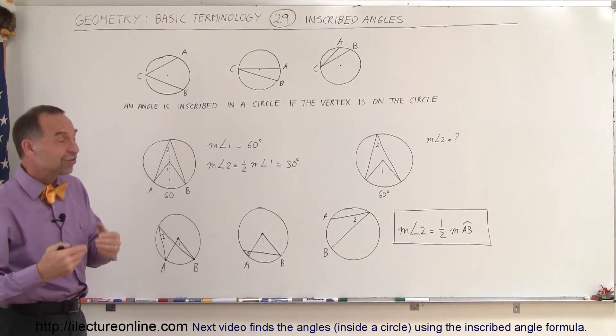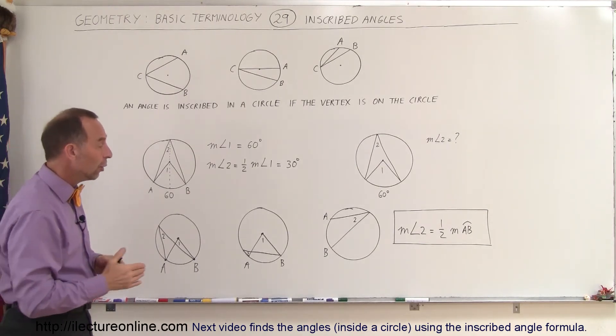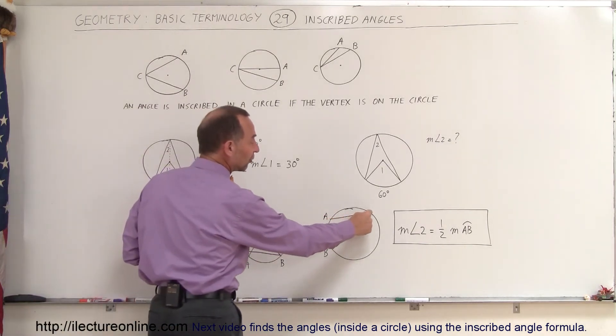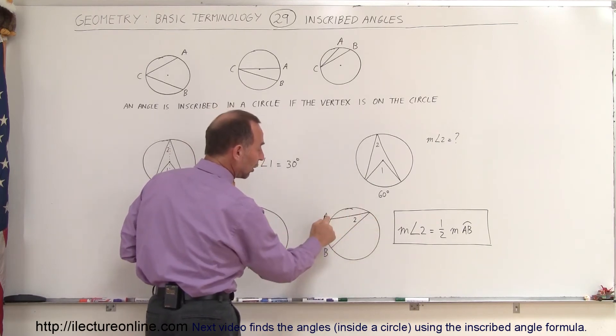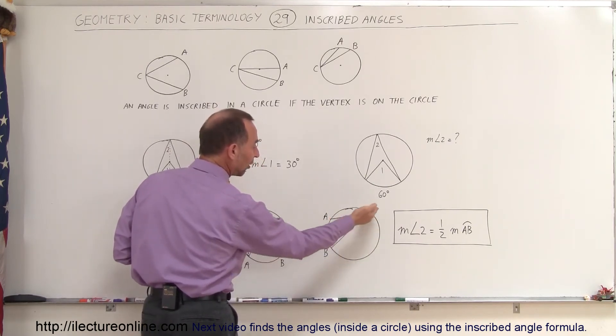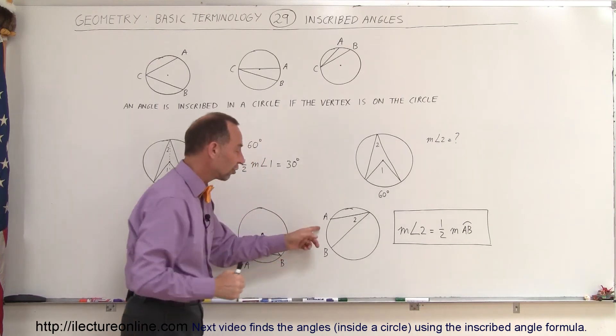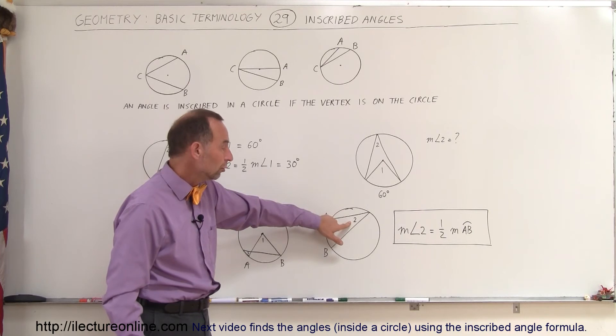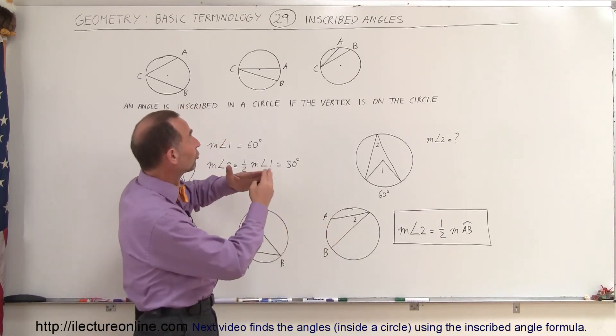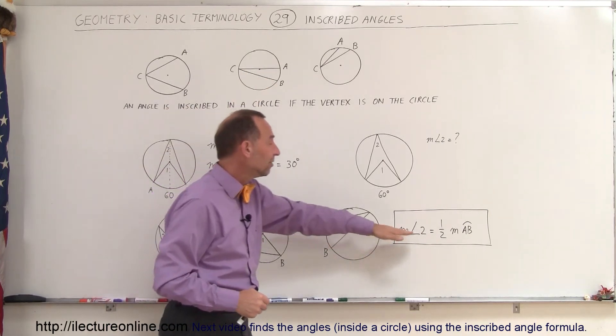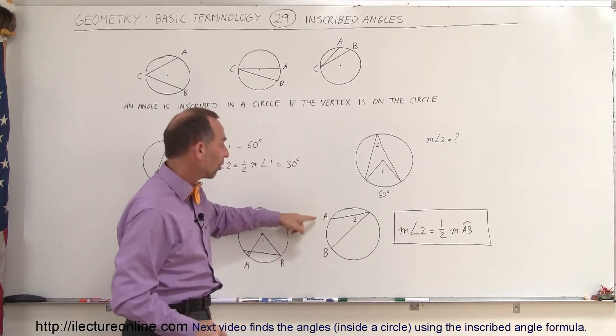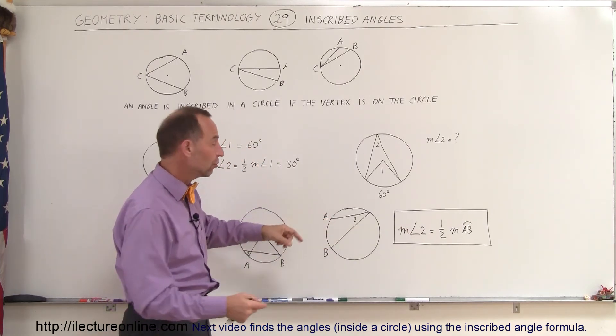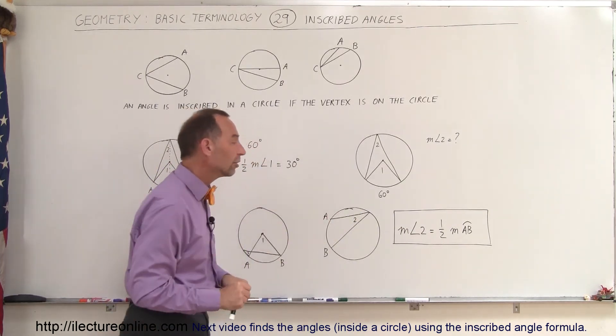And it turns out the answer is yes. It doesn't matter where the position of the vertex is as long as it's on the edge of the circle. We can always say that the measure of angle 2, that's the angle associated with the inscribed angle, is equal to one-half the measure of the arc made from the two points where the two lines meet the circle on the other side.